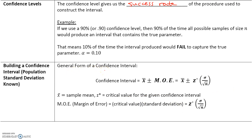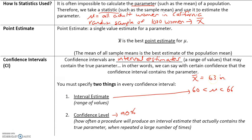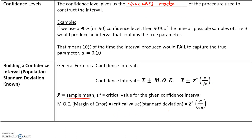Here's the general form of a confidence interval: x-bar plus or minus the margin of error. So if our sample mean is 63, the margin of error is 3 inches — meaning the true parameter could be 3 inches either way of 63 inches. The margin of error is calculated as Z-star times the population standard deviation divided by the square root of n, where Z-star is the critical value for a given confidence level.